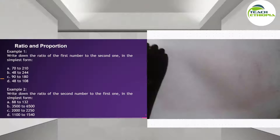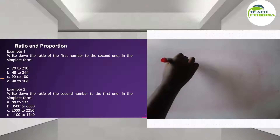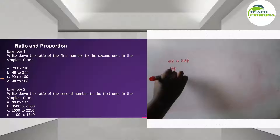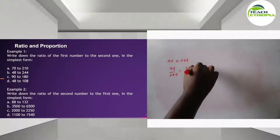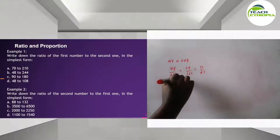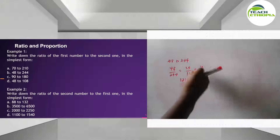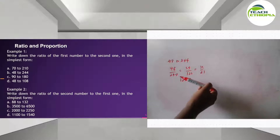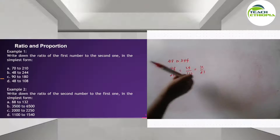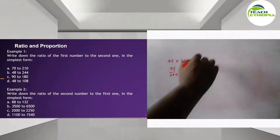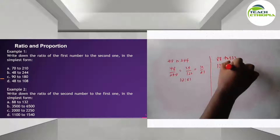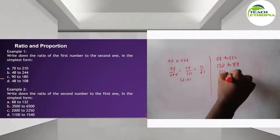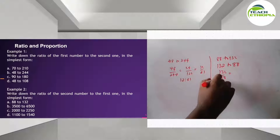Example b: 48 to 244. Dividing by 2 gives 24 to 122. Dividing by 2 again gives 12 to 61. So the simplified form is 12 to 61. Example 2: 132 to 88. Dividing gives the simplified ratio.